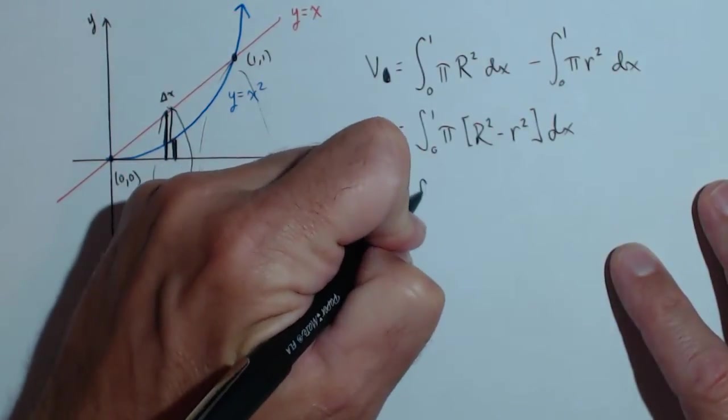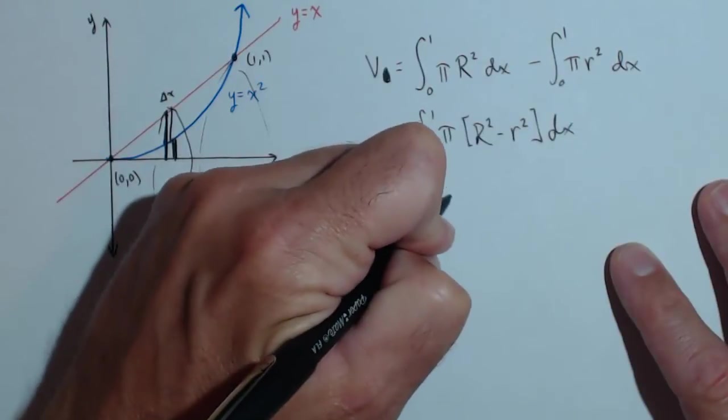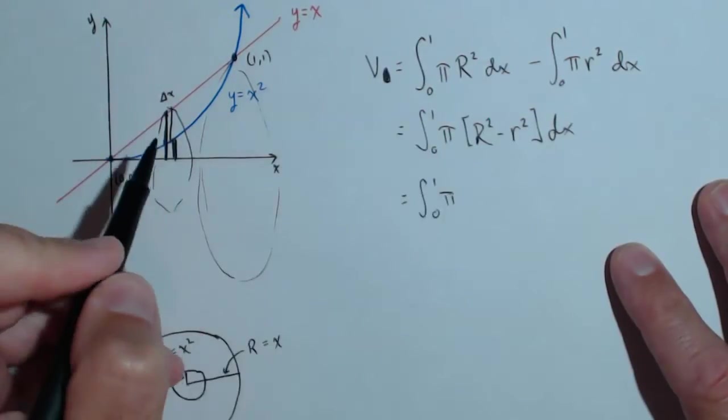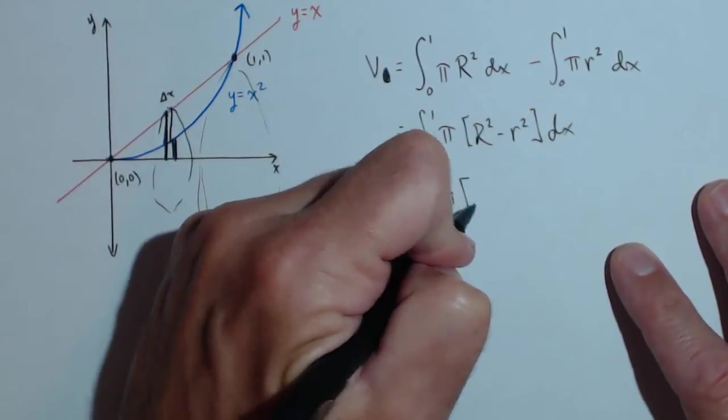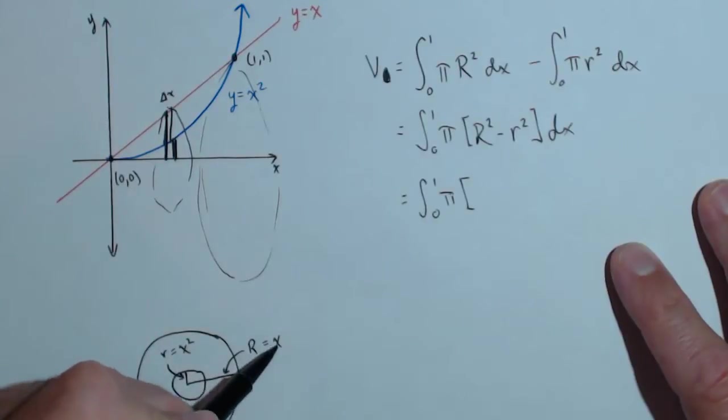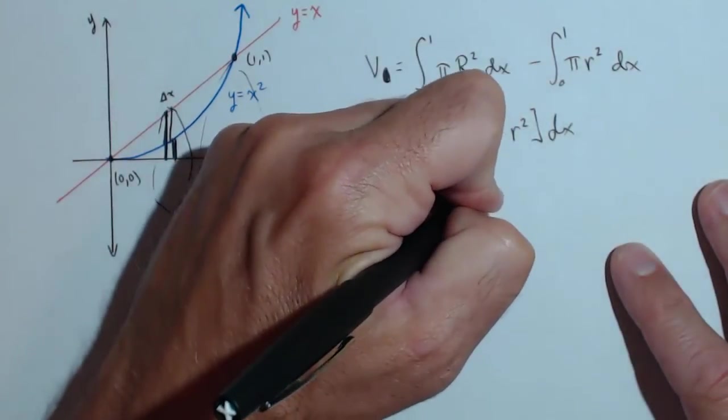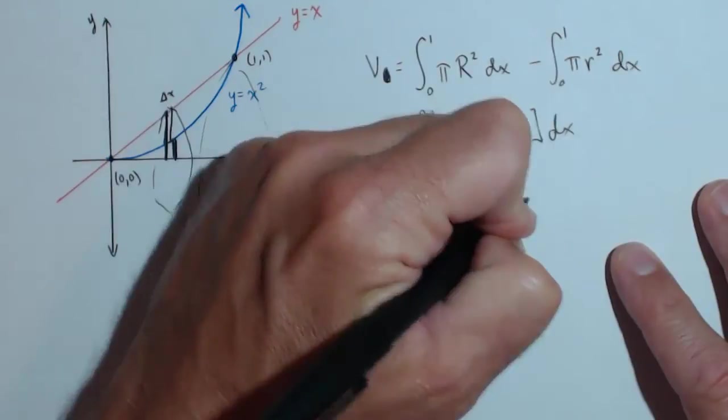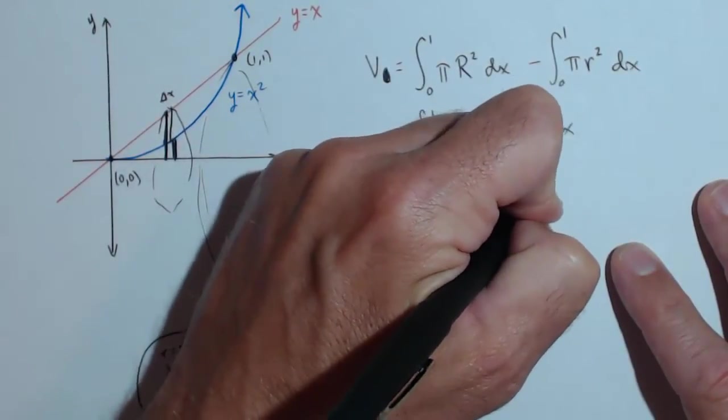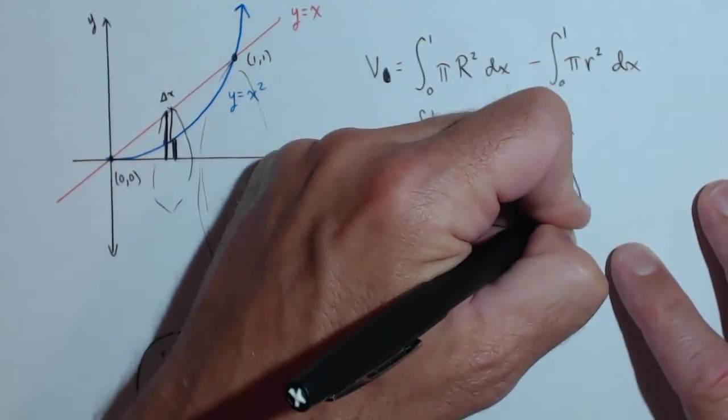But we're ready to set up our integral. We have 0 to 1. You can pull the pi out front if you want. And big R, like we said, is just the function x. So x squared. And then little r was x squared squared dx.